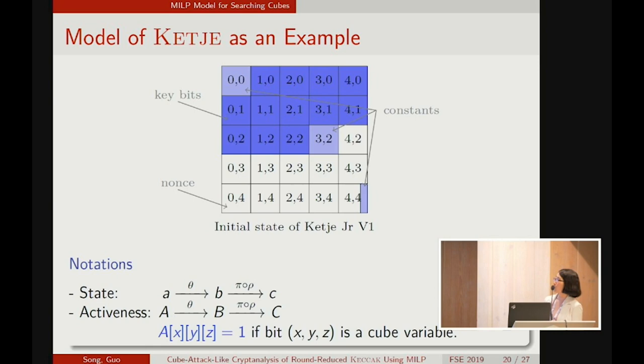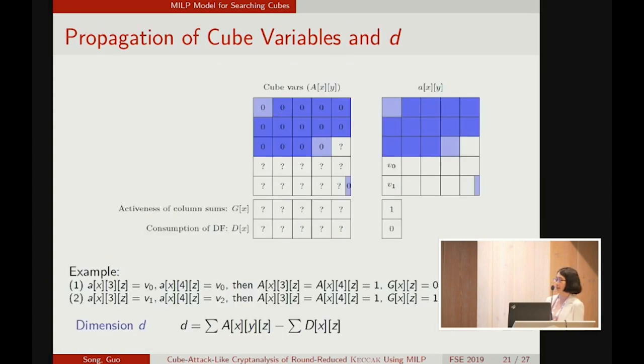We take KEYAK junior version 1 as an example to derive the inequalities for the model. Here, the light blue bits are constant. And the blue bits, these are key bits. And the white bits are the non-key space. Note that both the cube variables and auxiliary variables should be chosen from the non-key space. We let the letters ABC in lower case to stand for the state. And the activeness for this state is denoted by capital letters ABC. That is, if a bit contains a cube variable, this bit is active. And the activeness value is 1.